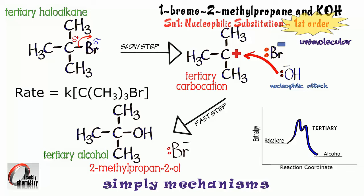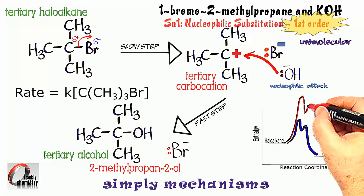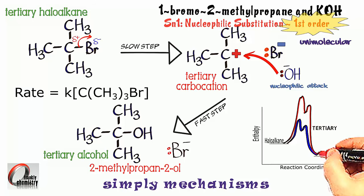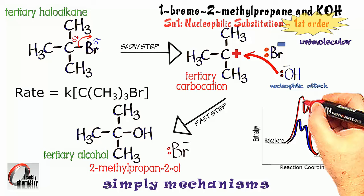Those alkyl groups attached to that carbon, and there are three of them, are electron donating. And, by donating electrons towards that carbon, they make it somewhat less unstable. And, if it's less unstable, that means it's got a lower enthalpy.